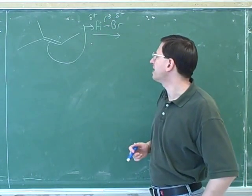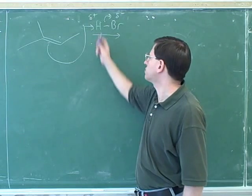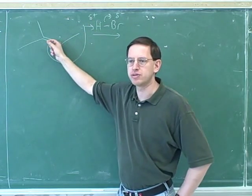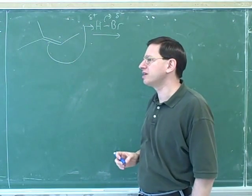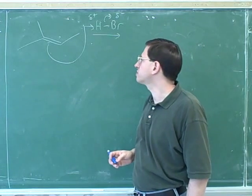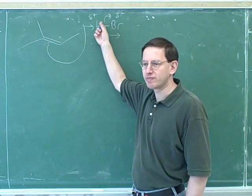So I think that earlier, you might have made kind of a very common mistake, which is to draw the arrow from the hydrogen to the bond. The reason why that's so common is because people start to think that the arrow is supposed to show which way the hydrogen is moving. But remember, the whole point of the arrow is to show us which way the electrons are moving.